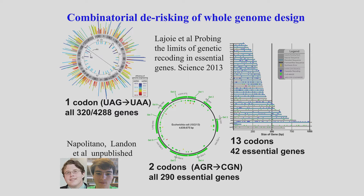The one-codon genome-wide change had very few real problems other than working out the technology. But when we did the two codons for arginine — the rare arginine codons AGA and AGG — we found about 12 cases where there were problems. We expected this to be the most problematic because they look a little bit like Shine-Dalgarno ribosome binding sites. Either removing or creating them is problematic. We then went on to do 13 codons genome-wide in 42 essential genes and found lots of issues — every gray bar means trouble with that aggressive recoding.